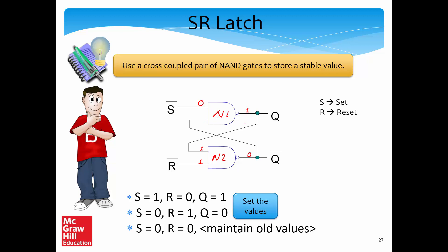In this stable system, the value of Q is equal to 1 and Q bar (the complement of Q) is 0. So the first combination — S=1, R=0 — is verified: Q is set to 1.